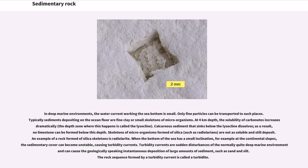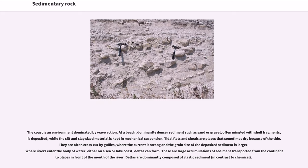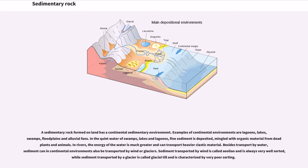Skeletons of microorganisms formed of silica are not as soluble and still deposit. An example of a rock formed of silica skeletons is radiolarite. When the bottom of the sea has a small inclination, the sedimentary cover can become unstable, causing turbidity currents — sudden disturbances that can cause the instantaneous deposition of large amounts of sediment such as sand and silt. The rock sequence formed by a turbidity current is called a turbidite. At a beach, dominantly coarser sediment such as sand or gravel, often mingled with shell fragments, is deposited. Where rivers enter the body of water, deltas can form — large accumulations of sediment in front of the mouth of the river.